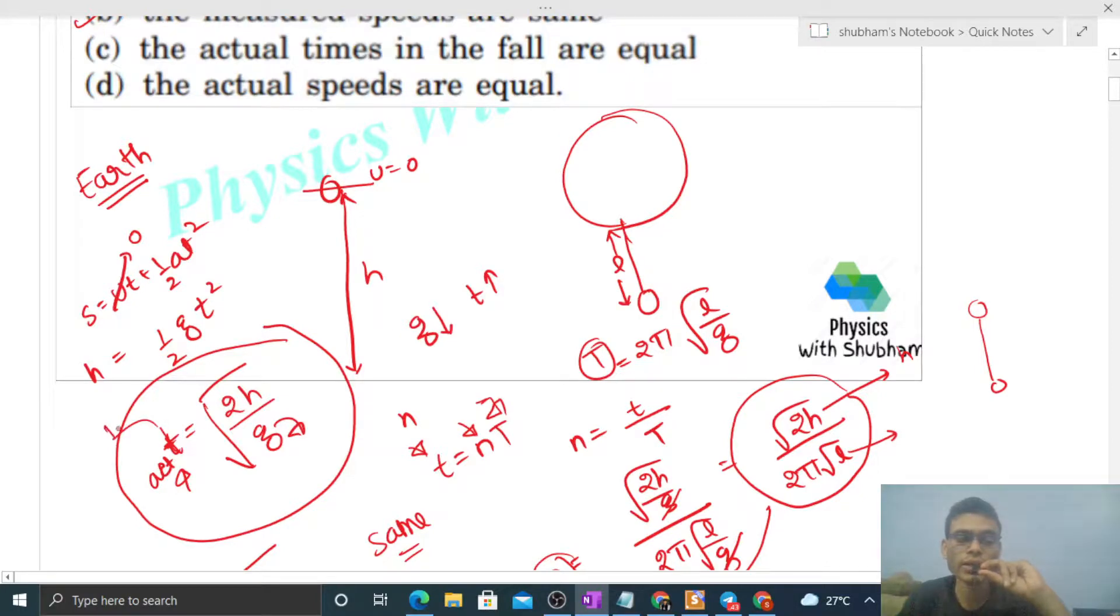So you can see option c is not correct. The actual speeds are equal. Actual speed will be distance, that is same, divided by actual time. So actual time different hai, right, so actual speed bhi different hoga.